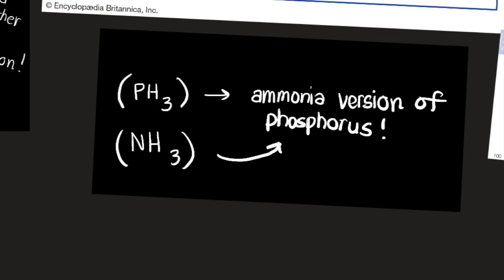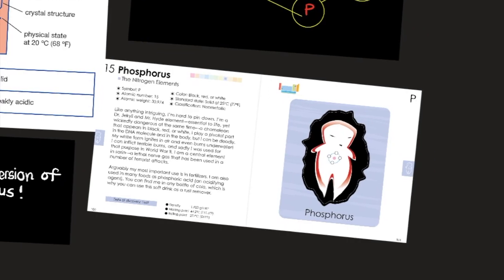So PH3, phosphine gas, is simply an ammonia version of phosphorus — just a little bit more dense, heavier, more energetic in terms of mass, not in terms of energy, but in terms of having momentum relative to other elements.